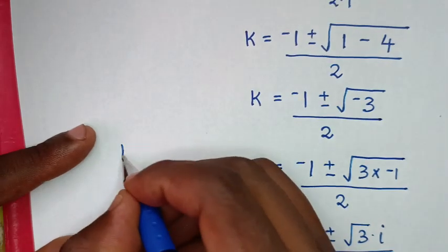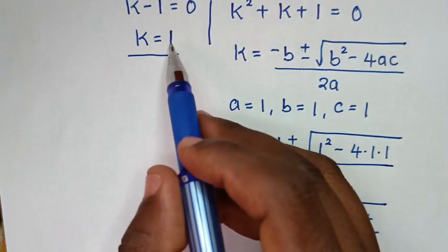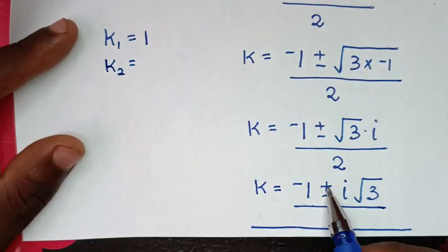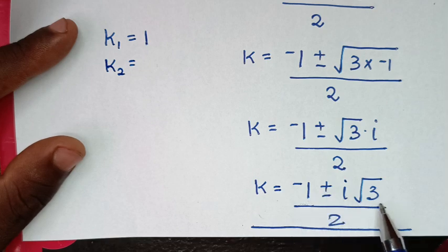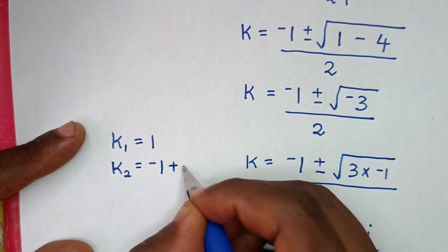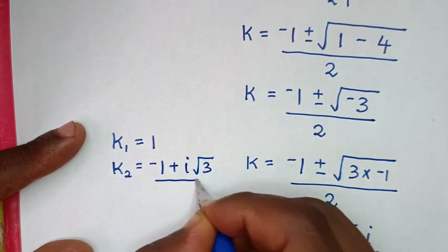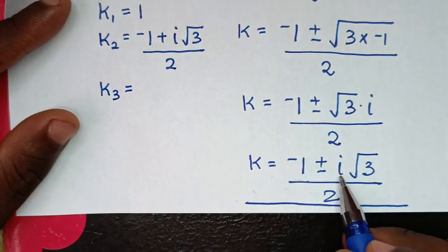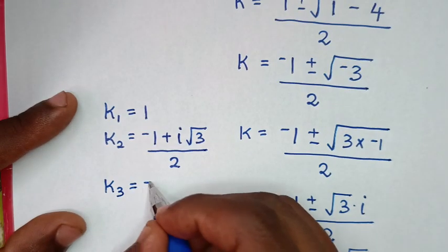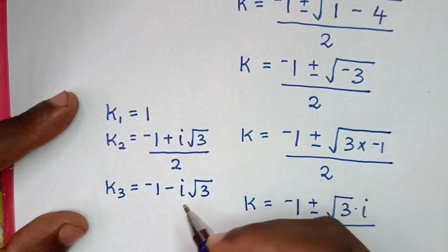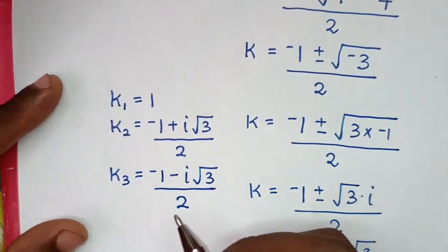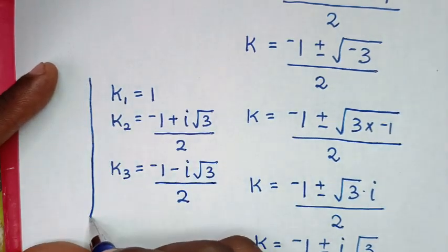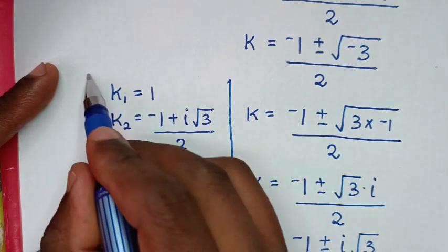Therefore, the first value of k is equal to 1. The second value of k, when positive, is negative 1 plus i square root of 3, over 2. The third value of k is equal to negative 1 minus i square root of 3, over 2. So we have one real solution and two complex solutions. These are all the values of k — we have three values of k.